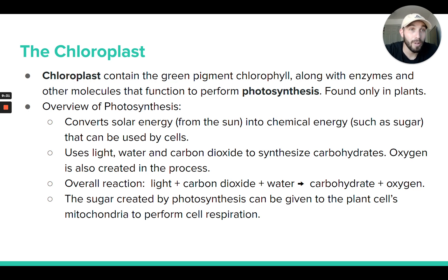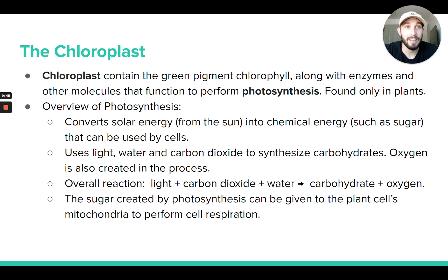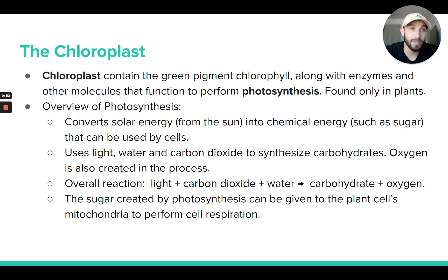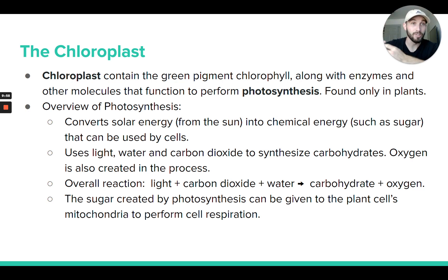That sugar made by photosynthesis can be used in the plant cell to build other organic molecules — combining with things to build amino acids for proteins, fatty acids and glycerol for lipids, or nucleotides for DNA. A lot of that sugar also goes to the mitochondria, which plant cells also have, to do cellular respiration and make ATP, since plant cells also need ATP.